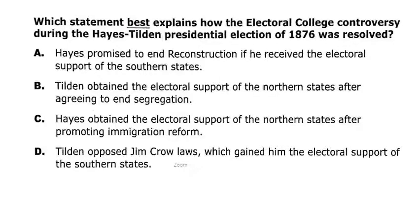Let's look at our EOC questions. The first asks: which statement best explains how the electoral college controversy during the Hayes-Tilden presidential election of 1876 was resolved? We talked about how it ended Reconstruction by removing federal troops from the South in exchange for Hayes becoming president. The answer shouldn't involve Samuel Tilden becoming president or immigration reform — it has everything to do with ending Reconstruction so that Hayes can be president. That's why it was a compromise.